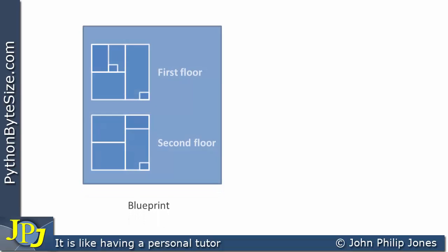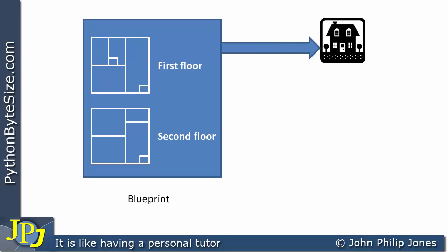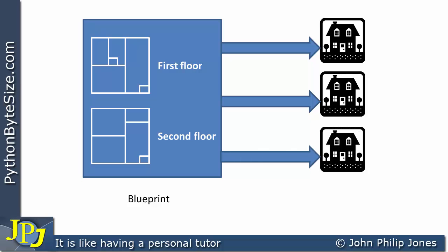If you're going to build a property, the first thing you would need is a blueprint. And from this blueprint, you could build a property. Here you can see we've built a house from the blueprint. Of course, using the same blueprint, you can build another property and another one. So these three houses all share something in common — they have all been built from the same blueprint.